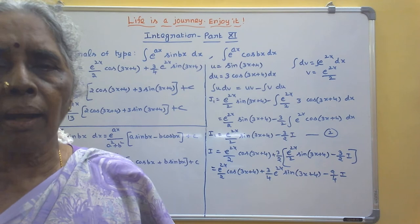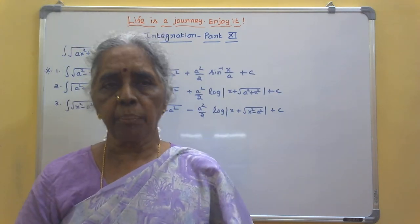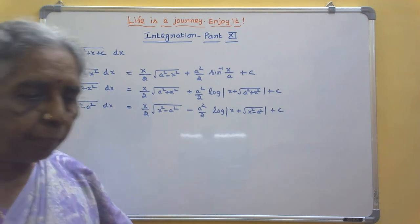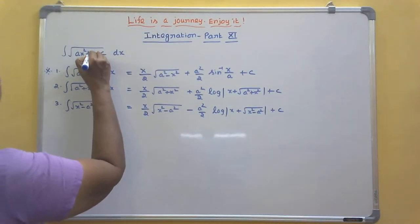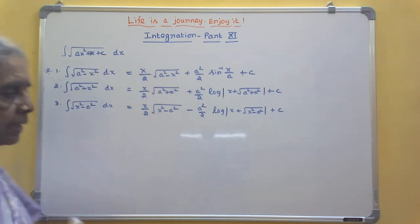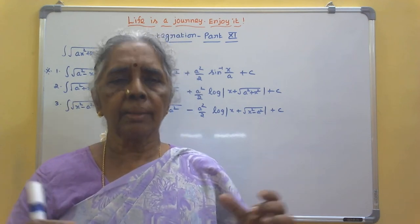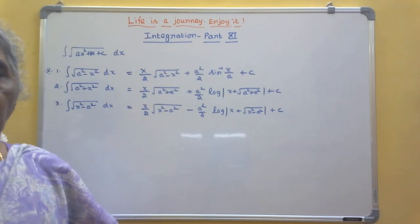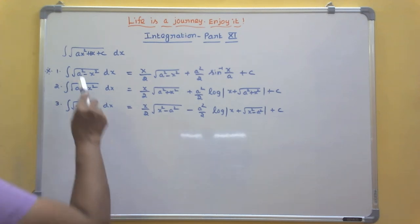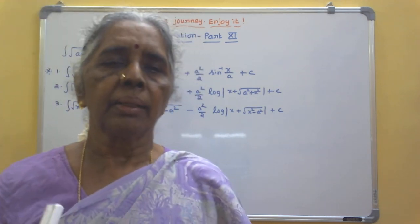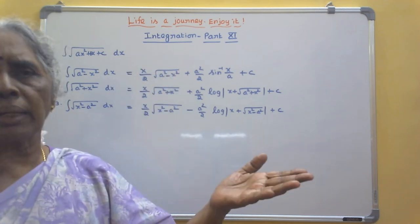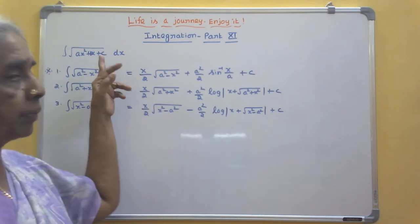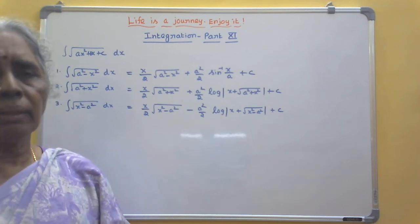We shall move to another type. Integral subtype: integral of √(ax² + bx + c) dx. This type is actually deleted from your syllabus. But there are three formulae connected with this type which you should definitely know, because especially the first formula you will be using in the next chapter on area. These formulae are oft-repeated, so please learn them even though the sum type is deleted.